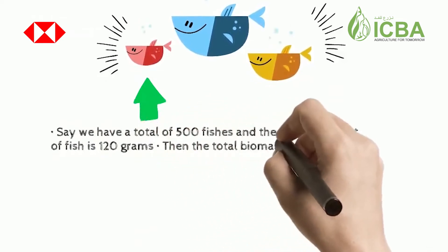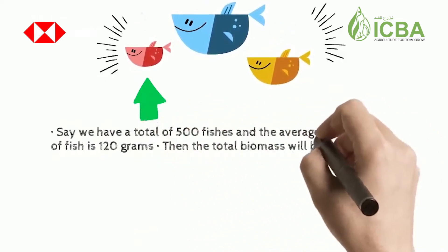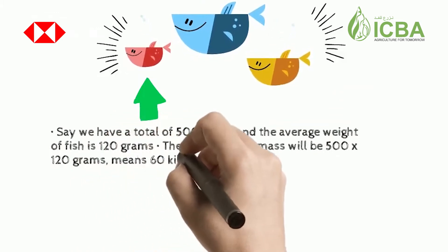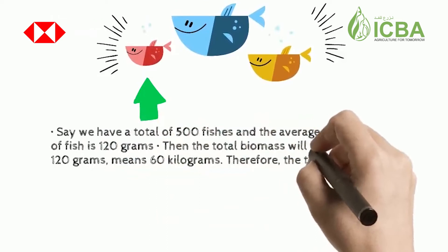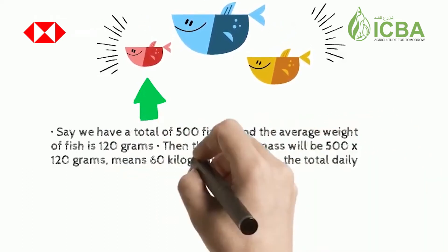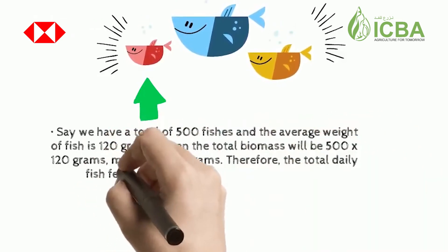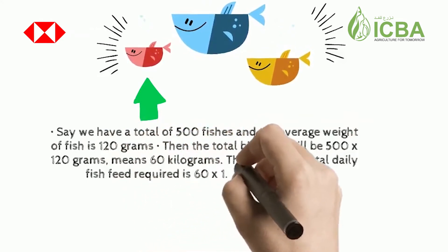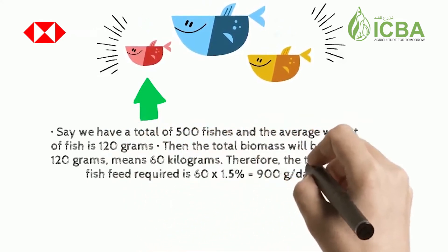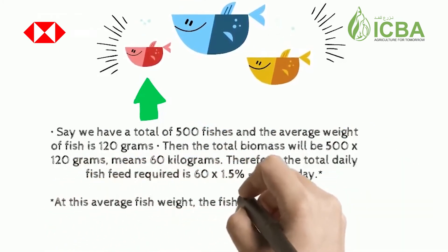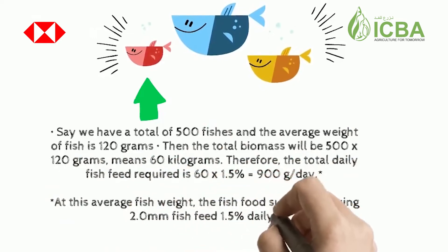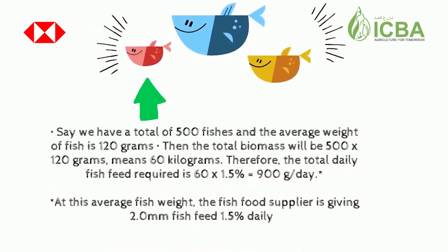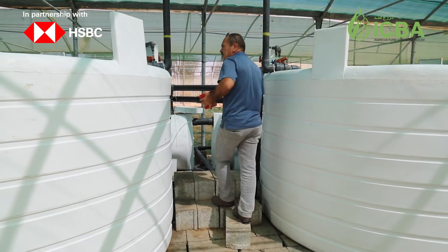Say we have a total of 500 fish and the average weight of each fish is 120 grams. The total biomass will be 500 × 120 g = 60 kilograms. Therefore, the total daily fish feed required is 60 kg × 1.5% = 900 grams per day. At this average fish weight, the fish food supplier recommends 2.0 mm fish feed at 1.5% daily feeding rate.